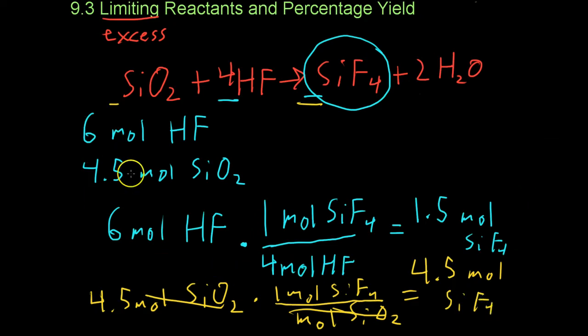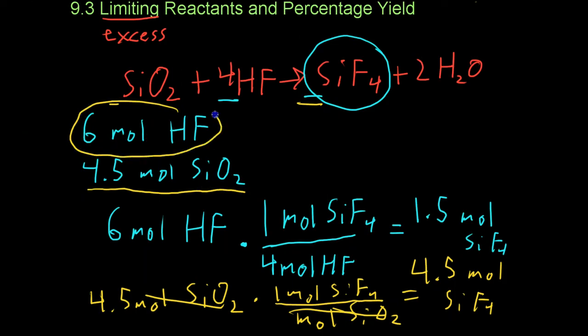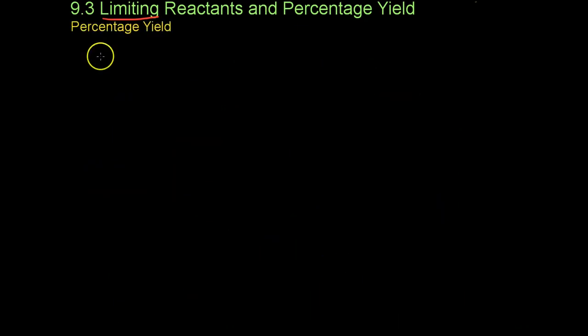Because you can make more silicon tetrafluoride with the 4.5 moles of silicon dioxide than you can with the 6 moles of hydrofluoric acid, silicon dioxide is the excess reactant. You will completely react away all of your hydrofluoric acid and end up with only 1.5 moles of silicon tetrafluoride, despite the fact that with your other reactant, you could make an extra 3 moles.